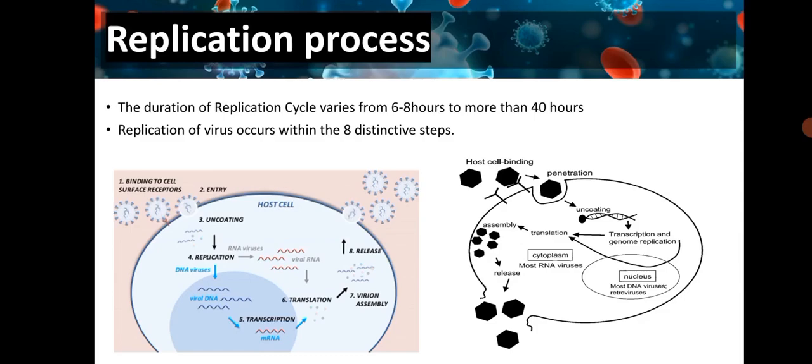The virus recognizes and binds to host cell surface receptors to enter the cell. After penetration, the viral genome is uncoated and its DNA or RNA nature determines where and how the genome will replicate. Most DNA viruses replicate in the cell nucleus while the majority of RNA viruses replicate in the cytoplasm of the infected cell. After messenger RNA production, viral proteins are expressed in the cytoplasm. The newly synthesized viral genome and proteins are assembled into new virions which are released outside the cell.